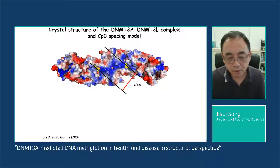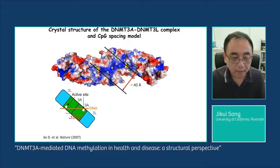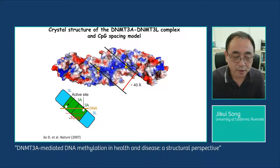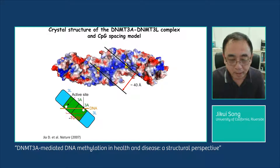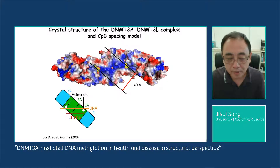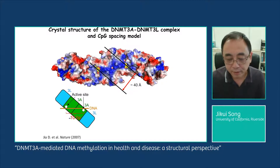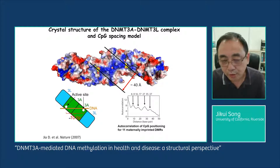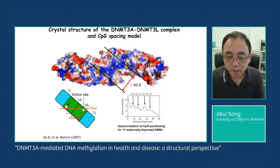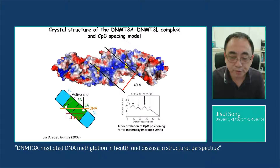Based on this observation, it has been proposed that the DNMT3A-DNMT3L complex is able to methylate two separate CpG sites located on the same DNA duplex, separated by 10 base pairs. Indeed, analysis of DNA methylation in the genome has shown that the target of DNMT3A favors a methylation periodicity of approximately 8 to 10 base pairs, supporting the notion that the active site spacing between the two DNMT3A monomers contributes to DNA methylation patterns in cells.